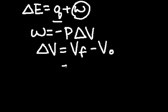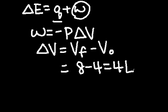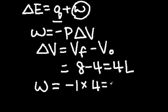The change in volume is just the final volume minus the initial volume, which, in our case, is simply 8 minus 4 equals 4 liters. The work done by the system is therefore equal to negative 1 times 4 equals negative 4 atm times L.